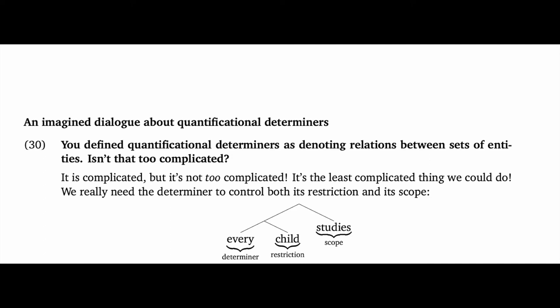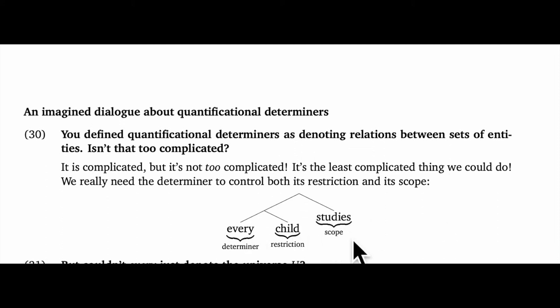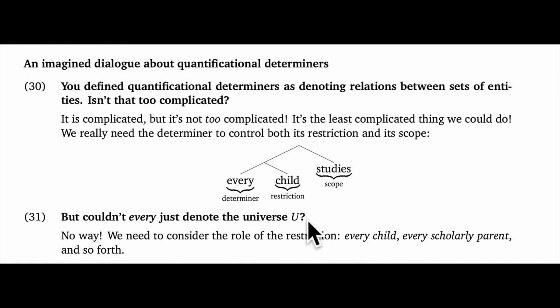So the student asks: you define quantificational determiners as denoting relations between sets of entities. Isn't that too complicated? My reply is: it is complicated, but it's not too complicated. It's really the least complicated thing we could do. We need the determiner to control both its restriction and its scope. The student replies: but couldn't every just denote the universe U?